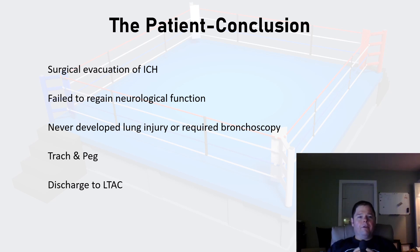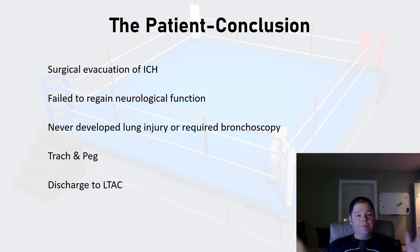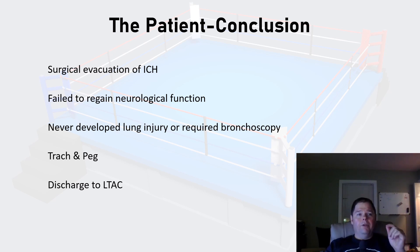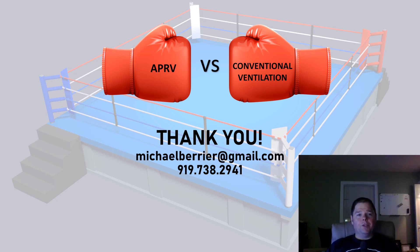As for our patient, he received surgical evacuation of his intracranial hemorrhage. Sadly, he failed to regain neurological function, stayed on the ventilator, and was unable to wean. He never developed lung injury or required any bronchoscopy — no mucus plugs, nothing that called his lung health into question, which is great news. Because of his neurological status, he was trached and pegged, discharged to an LTAC, and that's where we lost him to follow-up. Not a super happy story, but it does illustrate how true lung protective strategy can help these patients. APRV versus conventional ventilation — the fight is worth having, and I think it's going to spread to other units and other hospitals.